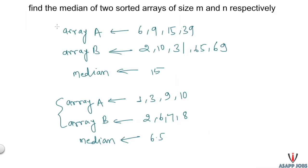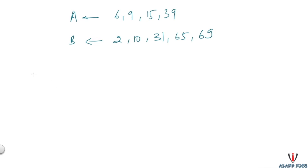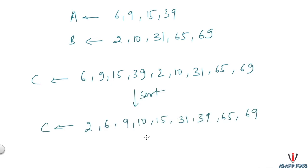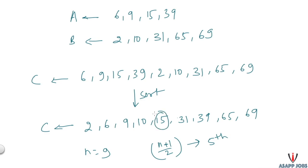Now let's get back to the question and start with the basic approach. In this approach, we create a new array C and add all elements of A and B one by one. Once we have all elements in C, we sort the entire sequence. Since the size here is 9 and n is odd, our median will be the fifth element, which is 15.